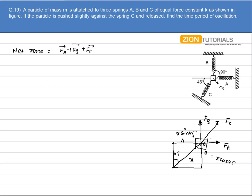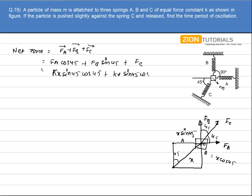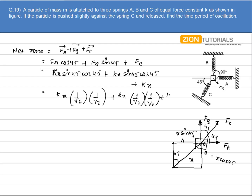Taking the component of FA along FC and the component of FB along FC — both are at 45°. So it will be FA cos 45° plus FB sin 45° plus FC. This gives KX sin 45° · cos 45° plus KX sin 45° · cos 45° plus KX, which works out to KX · (1/√2)(1/√2) + KX · (1/√2)(1/√2) + KX. In total the net force comes out to be 2KX acting on block M.